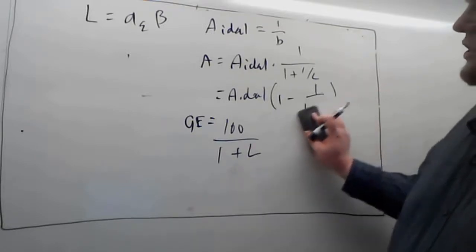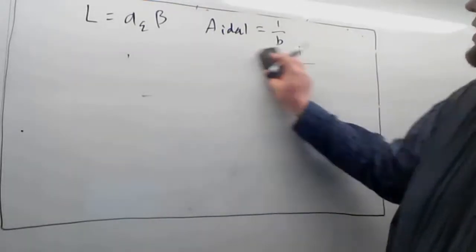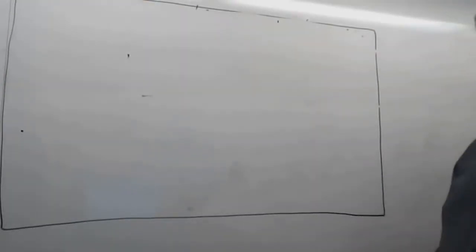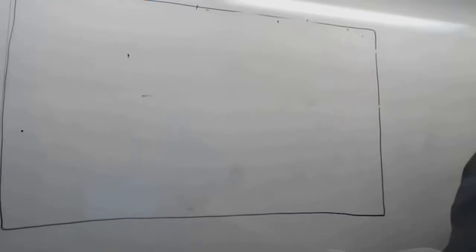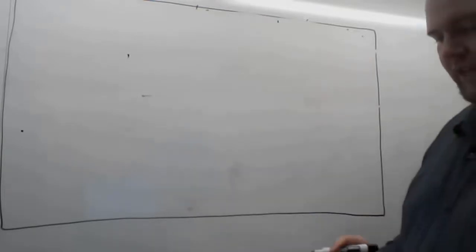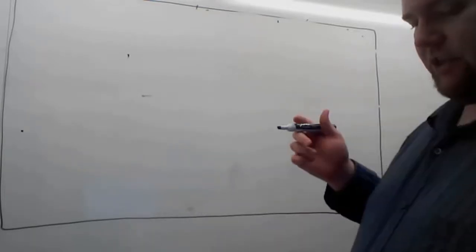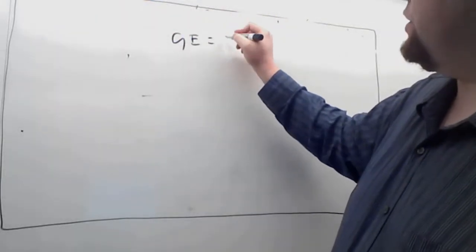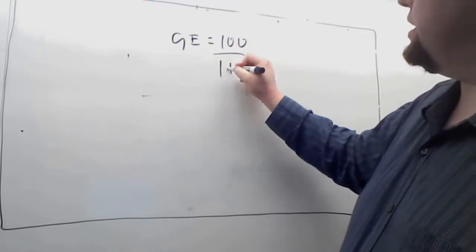You can look at these equations in your book or notes. In Example 1.7a, we're going to find the loop gain needed for a gain error of less than 0.1%. So what loop gain do we need to achieve a gain error less than 0.1%?